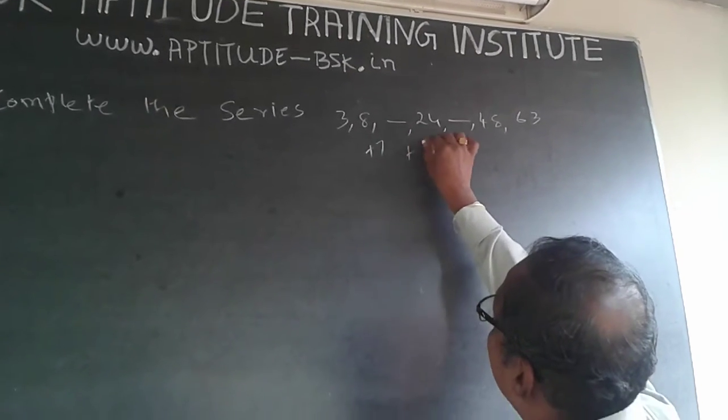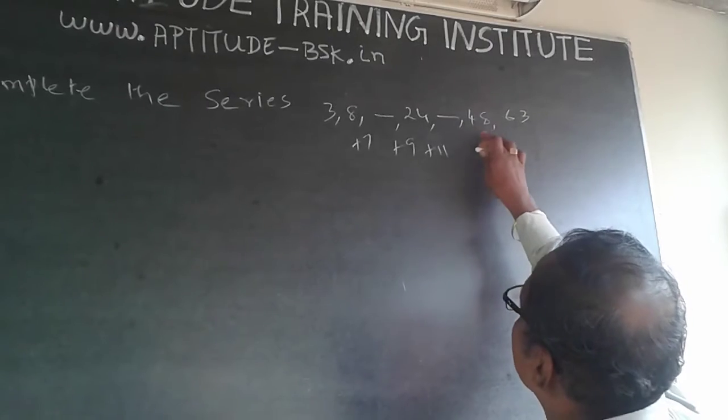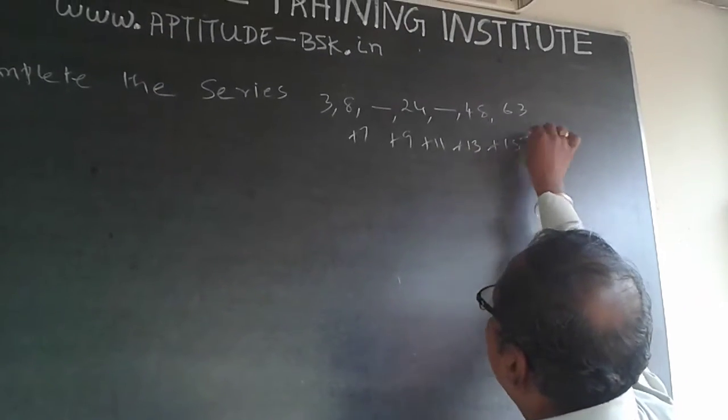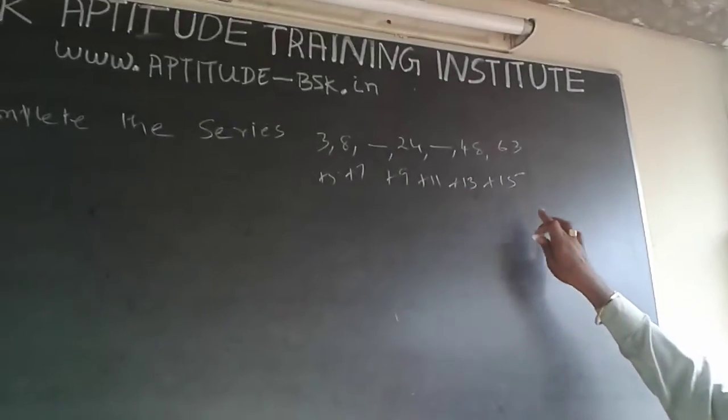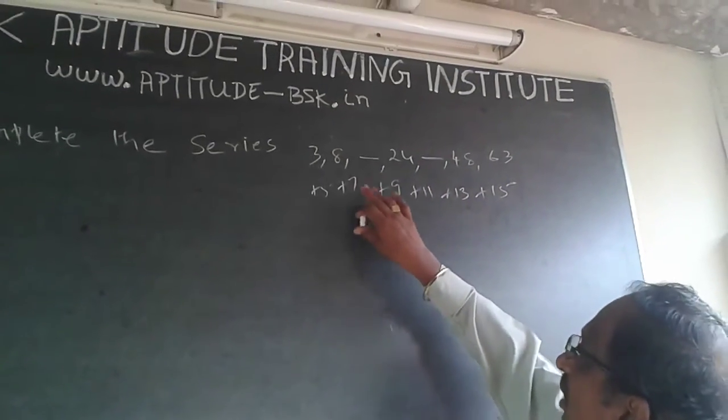Plus 7 gives 15, plus 9 gives 24, plus 11 gives 35, then 48, plus 13, plus 15. First is plus 5, then plus 7, plus 9, plus 11, plus 13, plus 15. This is one way of finding it out.